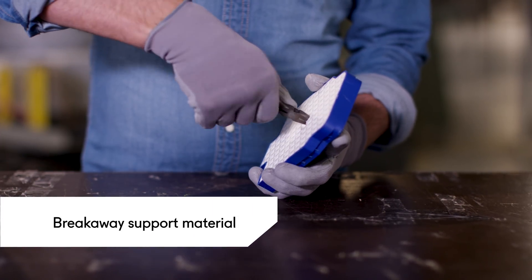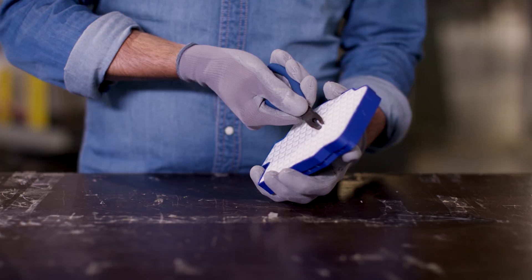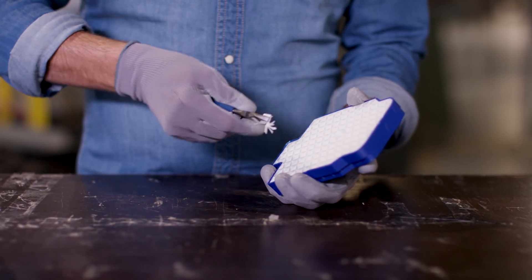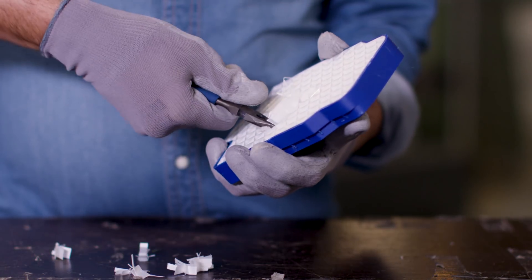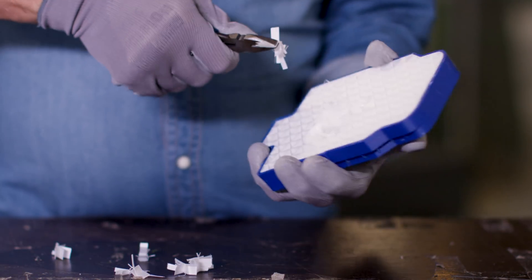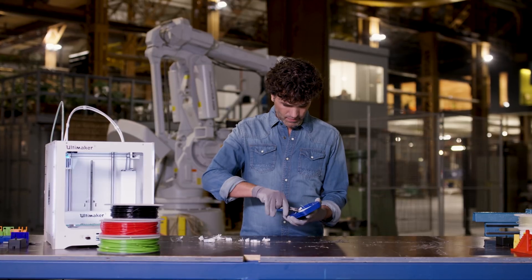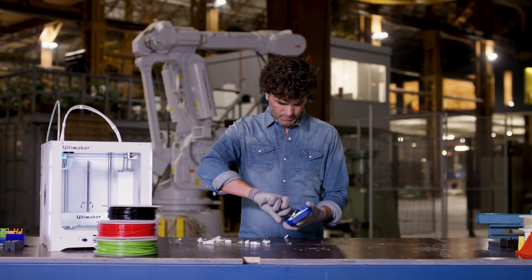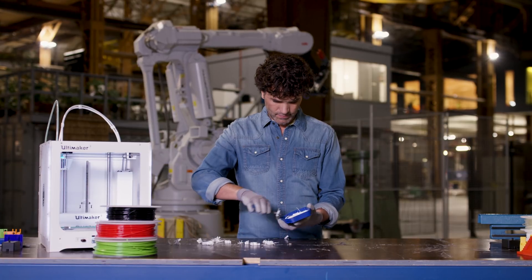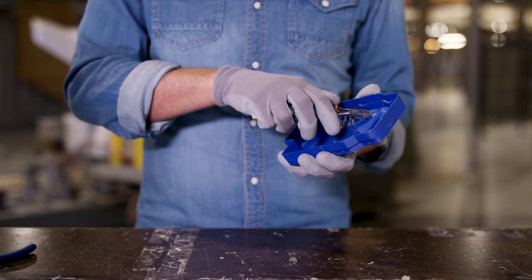Ultimaker Breakaway is designed to support strong models with less complex geometries and no hard-to-reach cavities. Breakaway leaves behind a good quality surface finish and is optimized for use with ABS, Nylon, PLA, CPE, and CPE+. Removing Breakaway can be done in a matter of minutes with pliers.